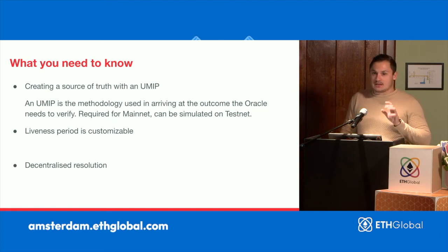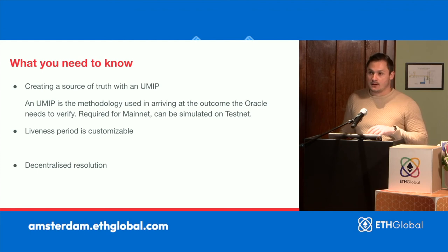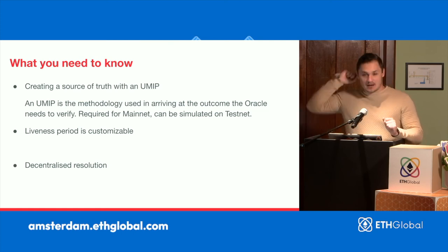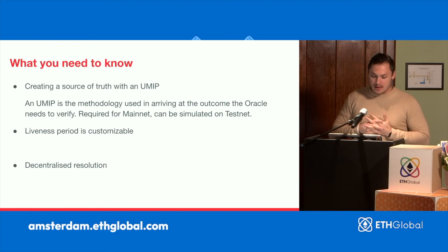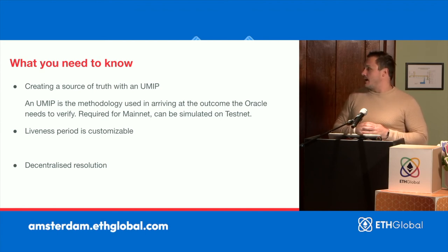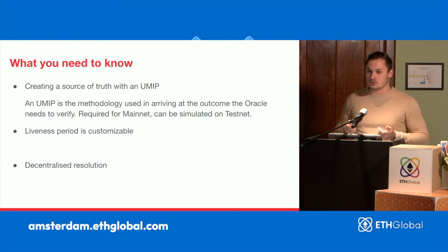If you're building on testnet, don't worry too much about creating a UMIP — it's really just for mainnet. The liveness period is quite customizable: I set it to three minutes for this demo, but we usually set it to two hours, or you can set it for a couple of days. Just play around with that liveness period. Also important: the requester, proposer, and disputer don't all have to be the same person. That decentralized resolution has a game that incentivizes everyone to arrive at the right price — if a proposal looks wrong, it's basically free money for anyone who wants to dispute it.